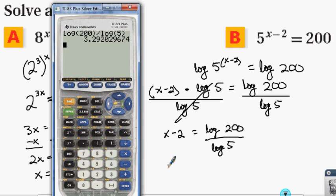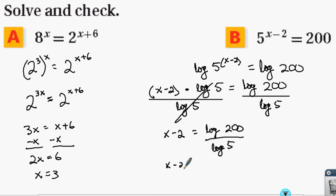So x minus 2 is approximately 3.29, and then to get x, we simply add 2 to both sides of the equation. Therefore, x is approximately 5.29.